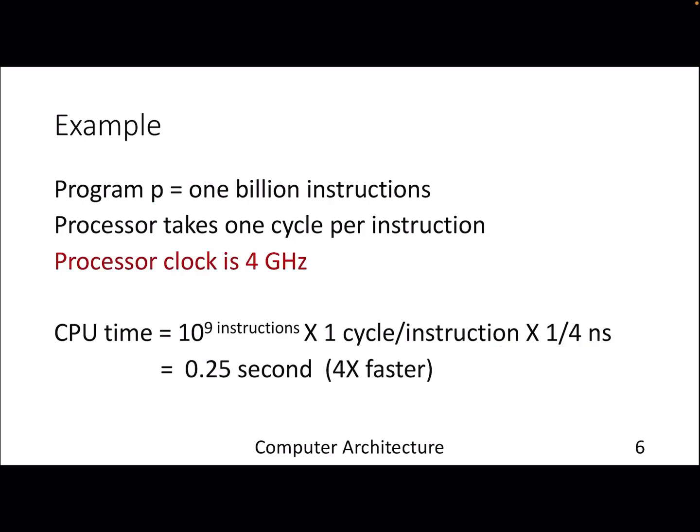Let's change that a bit and make the processor clock 4 gigahertz without changing the cycle per instruction. Now processor clock has become 4 gigahertz, which means it's four times faster. Previously cycle time was one nanosecond, now it has become 0.25 nanosecond. So the overall CPU time has become 0.25 second, which is four times faster.